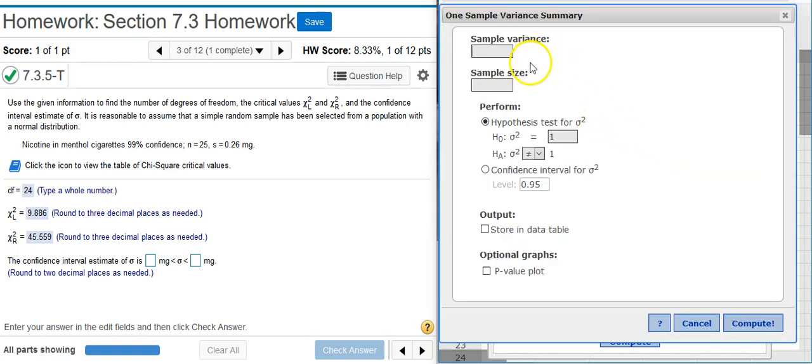Here in the options window, I'm asked to calculate the sample variance. Well, we're not given variance here, but we are given sample standard deviation. If we remember that variance is simply the standard deviation squared, I can get the sample variance I need by squaring the sample standard deviation.